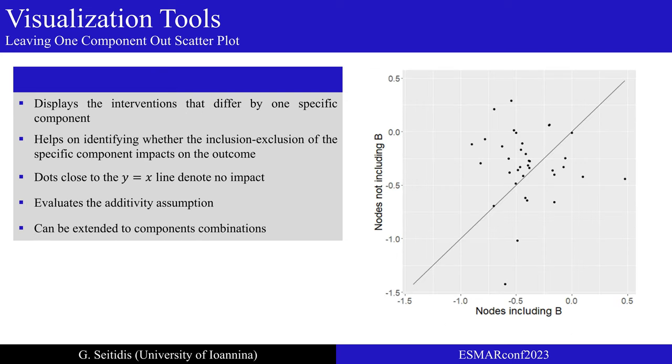We can also explore whether the inclusion or exclusion of a specific component impacts on the outcome. The leave one component out scatter plot identifies a pair of interventions that differ by one specific component. Here is a scatter plot for the set of interventions that differ by component B. Axis Y displays the NMA effect estimate for the interventions that do not include component B. And Axis X when component B is included. Dots close to the line of equality signify no impact on the outcome. Dots above this line indicates that the NMA effect estimates are larger when the component is not included in the intervention.